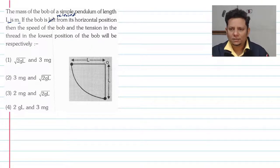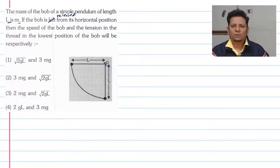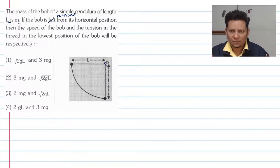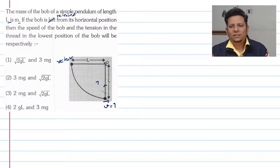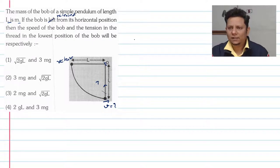हमें बताना है — यह simple pendulum actually SHM नहीं कर रहा है, बट simple pendulum है। उसको यहां से release किया है। जब वो यहां से यहां पहुंचेगा, तो इस जगह पर tension T क्या होगी और यहां पर speed क्या होगी। Energy conservation use कर लेते हैं। हम कहते हैं initial energy will be equal to final energy.